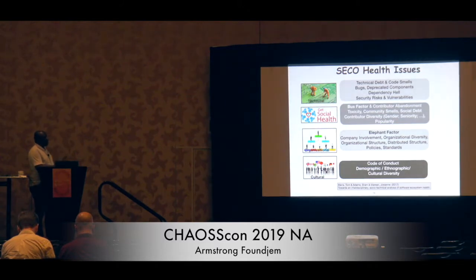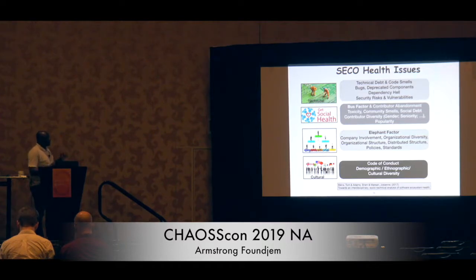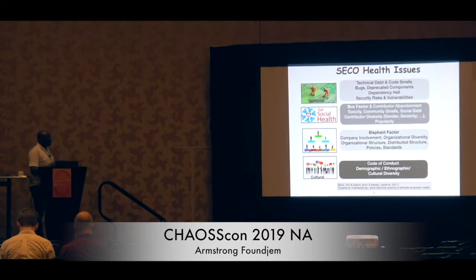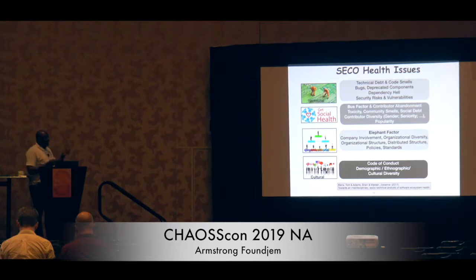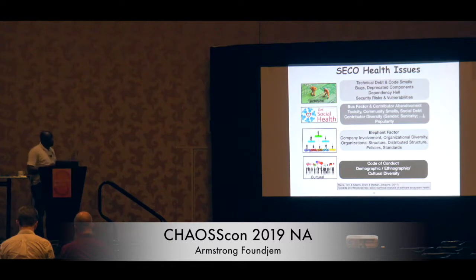There are four categories of technical issues that people have measured, which we categorized. At the technical level we have technical debt, code smells, bugs, and things like that. For the social dimension, we saw the bus factor, which is an important aspect when talking about project or ecosystem health. People often discuss abandoning — it is a common phenomenon in open source projects, but sometimes people don't know how to retain key developers, and this lack of retention has caused many projects to collapse. We also look at the elephant factor, code of conduct, and similar concerns.